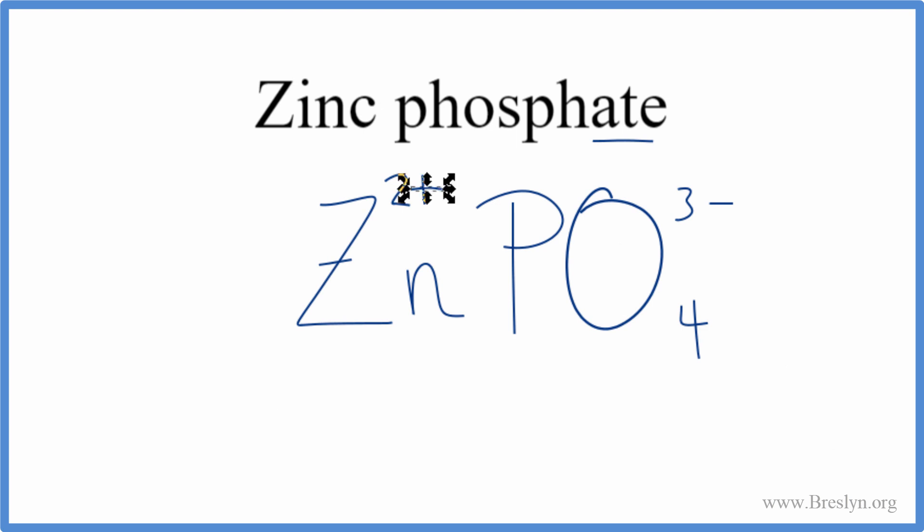We'll use something called the crisscross method. We'll move the 3 over here and the 2 over here. Get rid of these. And then we do need to put parentheses around the phosphate, because this is a polyatomic ion.